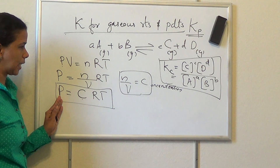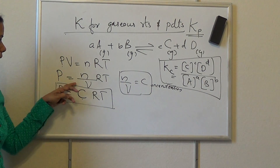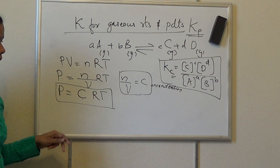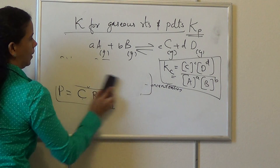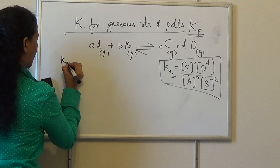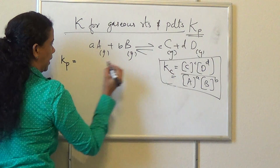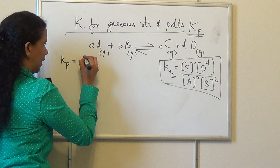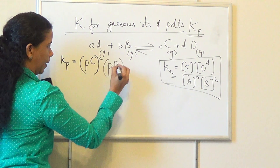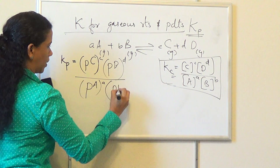Using the relation P = CRT, we can express Kp in terms of partial pressures. Kp equals the partial pressure of C raised to c, times the partial pressure of D raised to d, divided by the partial pressure of A raised to a, times the partial pressure of B raised to b.